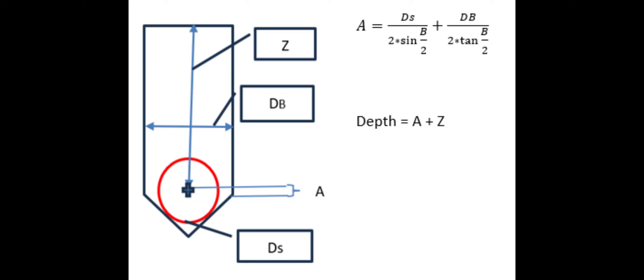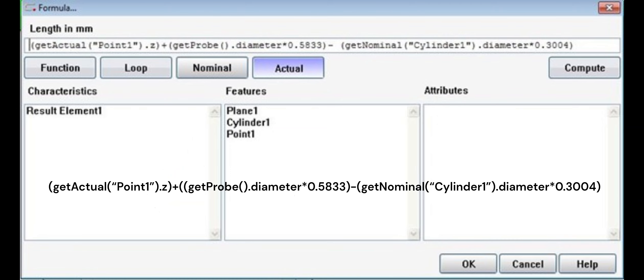Here is the formula we will be using. Create a result element's characteristic and right-click in the formula box. The below formula is for a 118-degree drill bit angle.